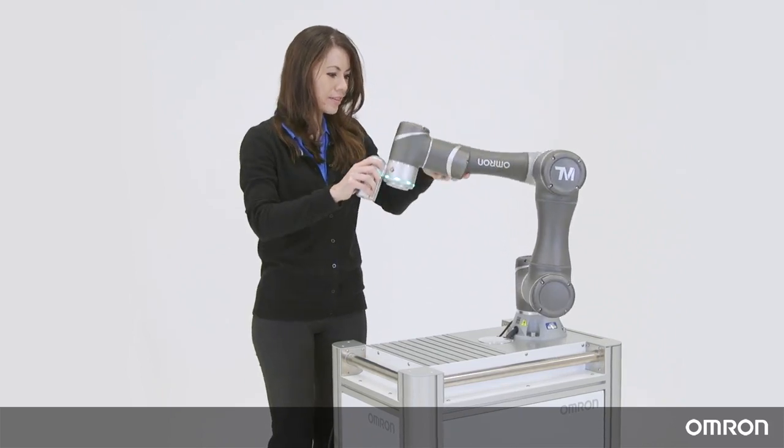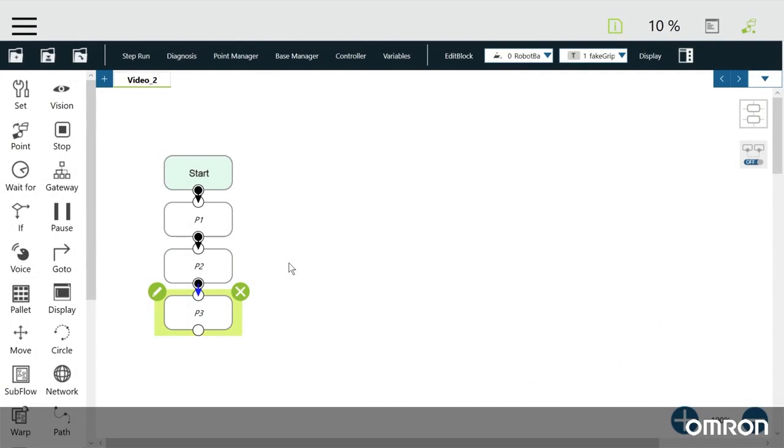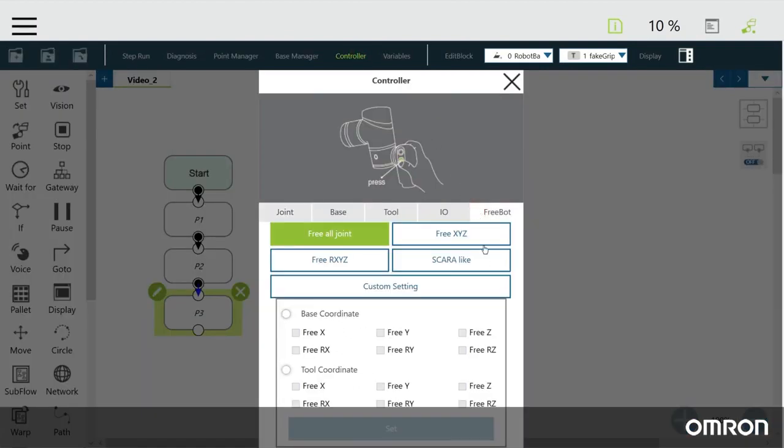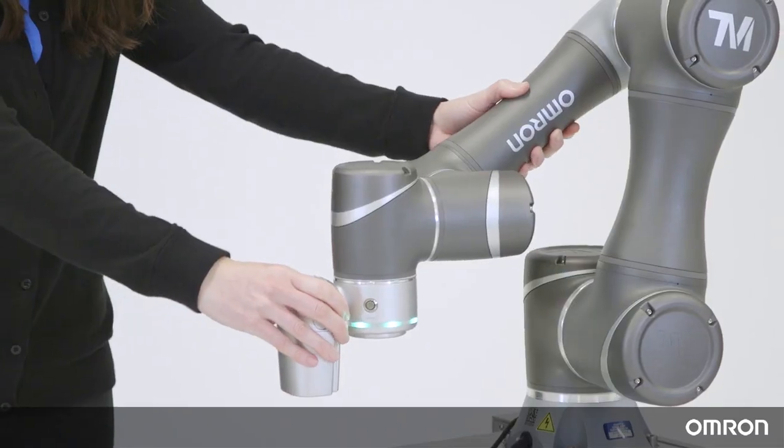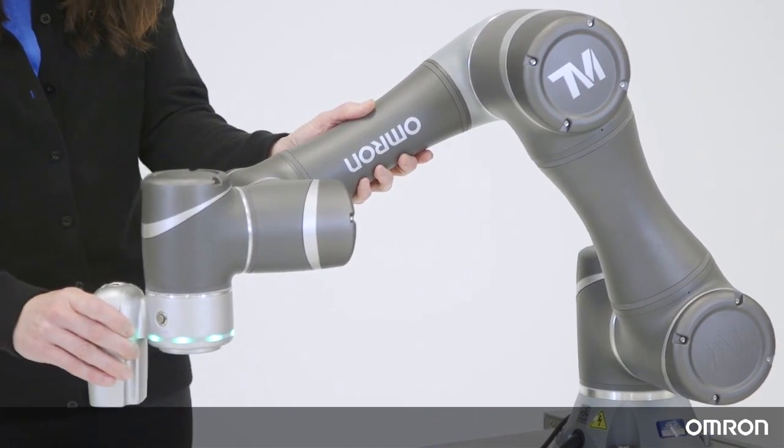For example, if you want to teach the Cobot to do a simple pick and place using a SCARA-like motion, go to Controller, Freebot, and SCARA-like. This will restrict the motion to only 4 axes of motion to imitate the movements of a SCARA robot.